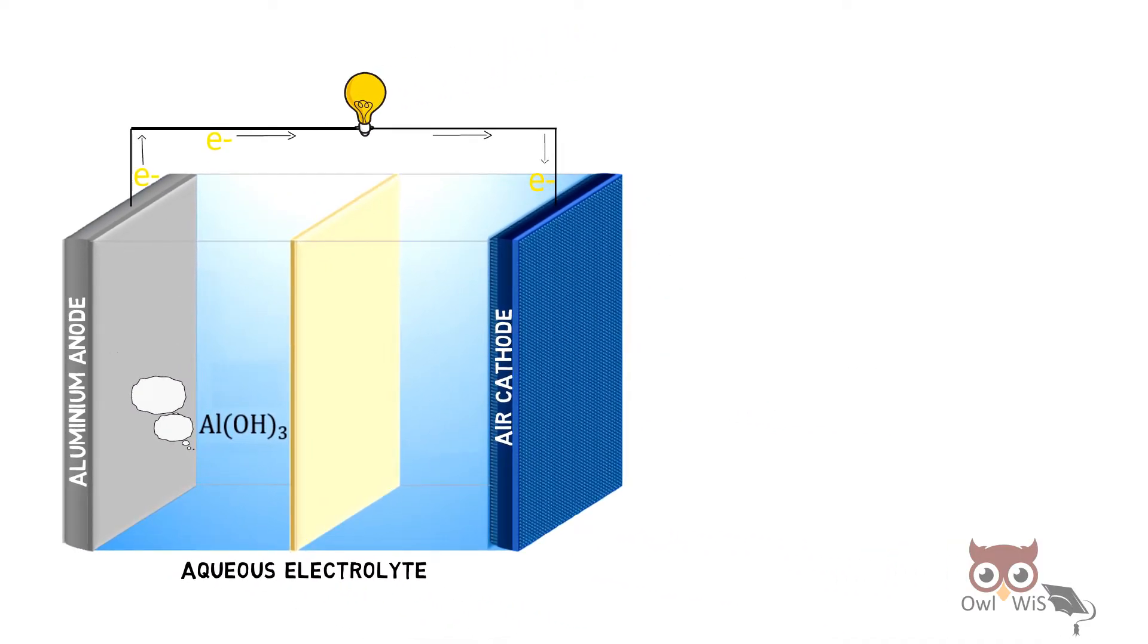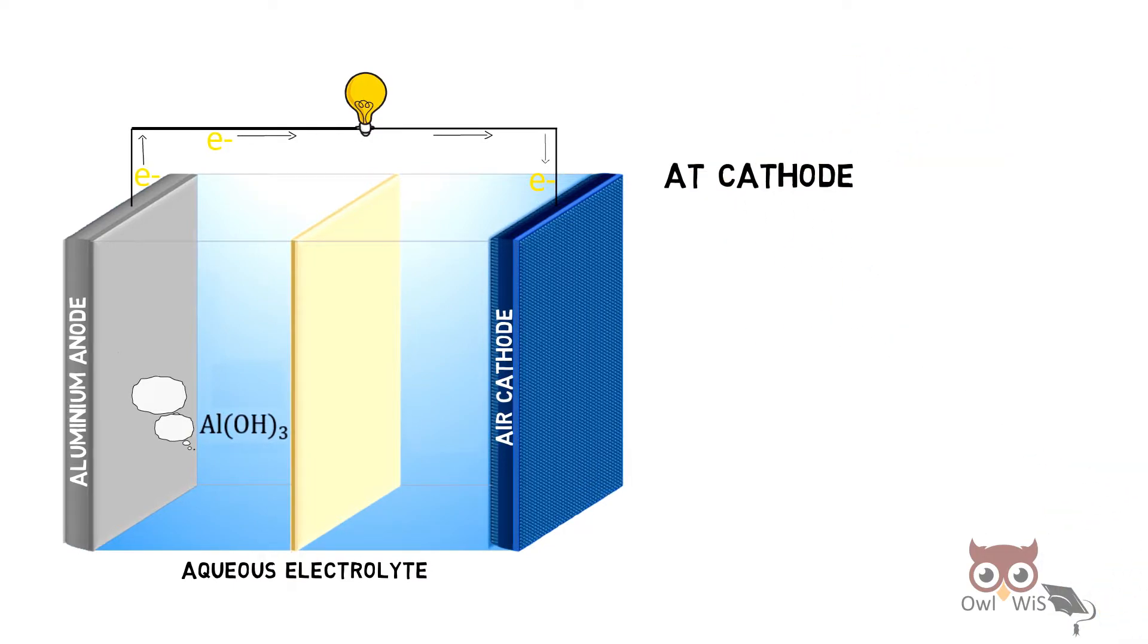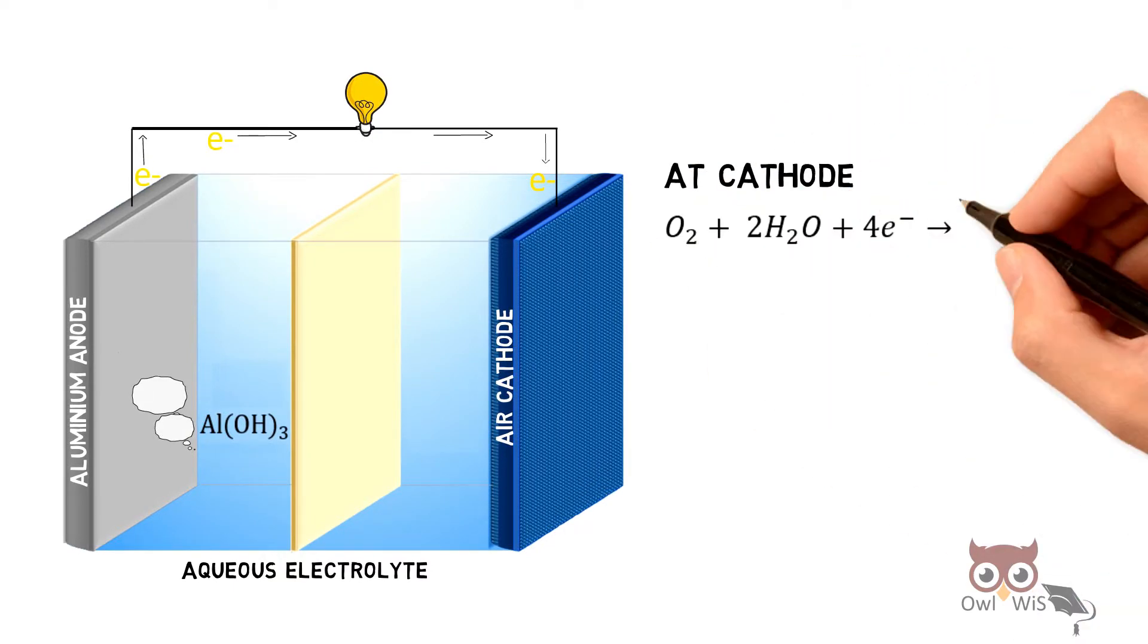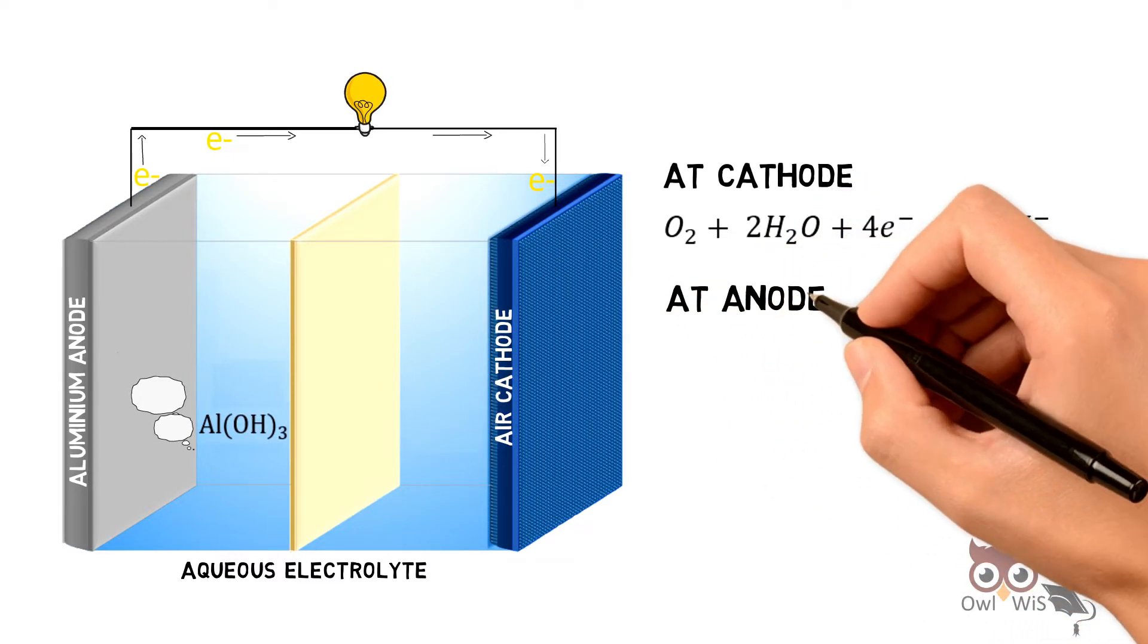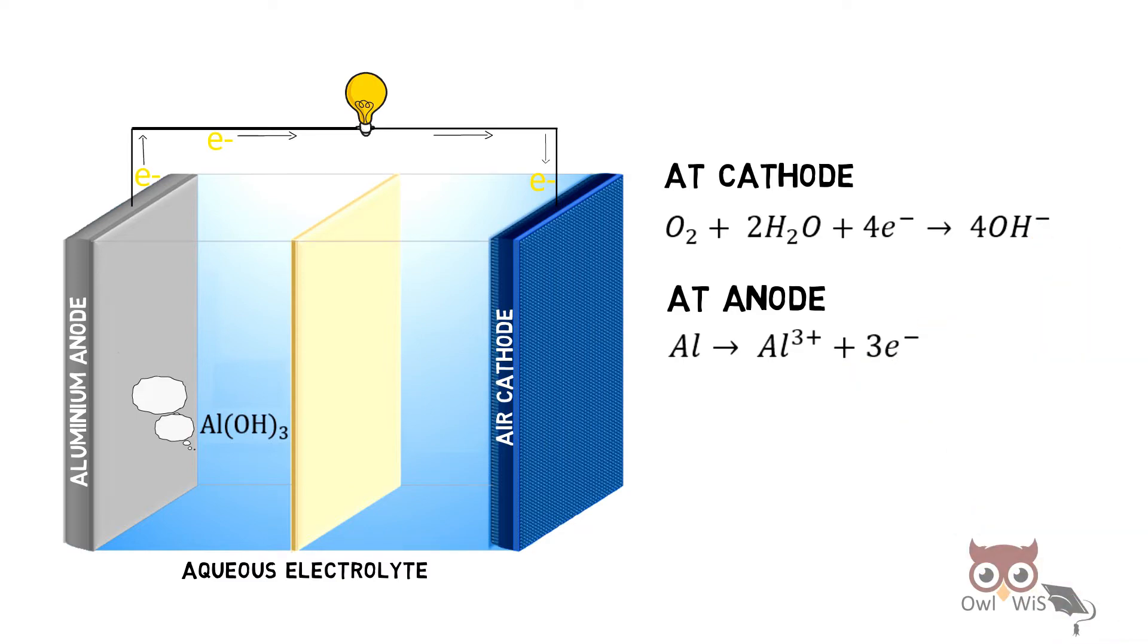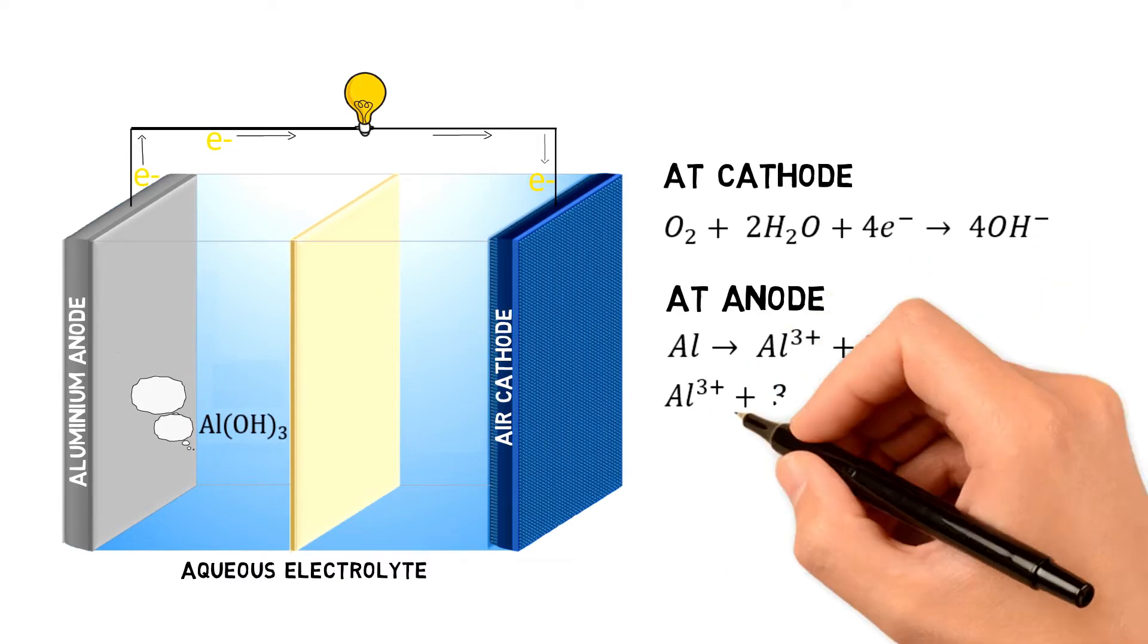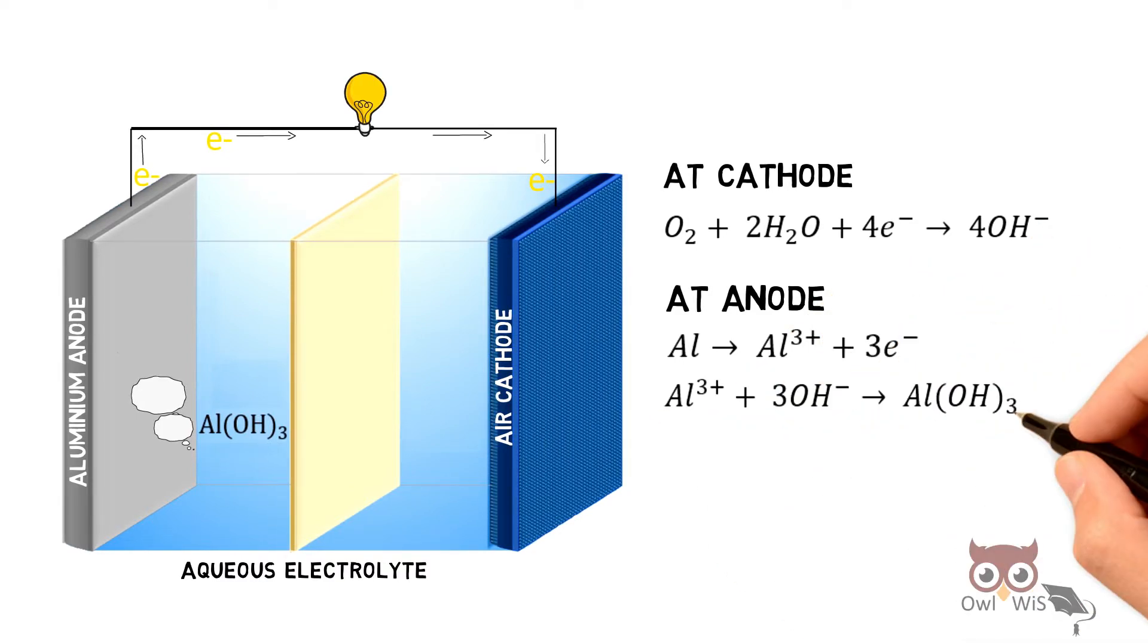Let us understand the reactions. At cathode, water reacts with oxygen to form hydroxide ions. At anode, Aluminium ions react with hydroxide ions to form Aluminium hydroxide.